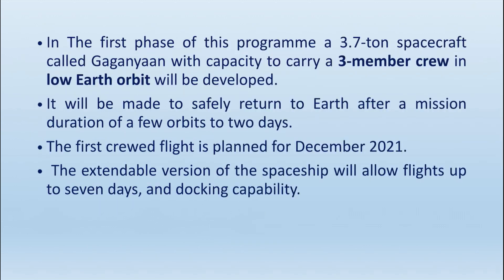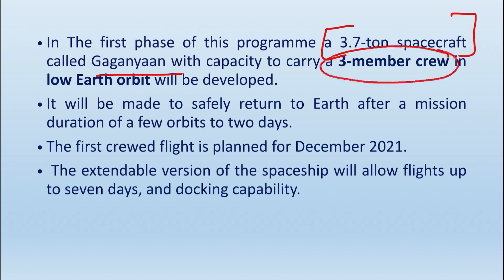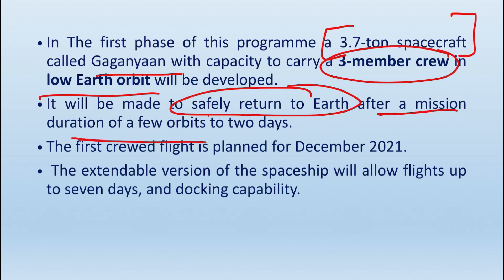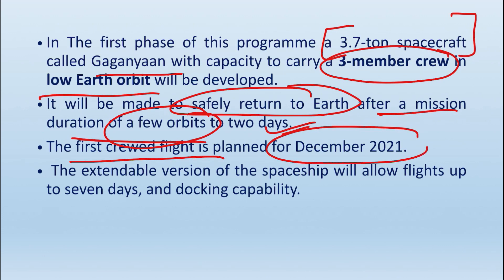In the first phase, there will be a 3.7-ton spacecraft that will carry three crew members — astronauts — into low Earth orbit where they will complete a few orbits. They will safely return to Earth after the mission duration of up to two days due to the orbits, and then safely land. The compartment will be recovered, and the first crewed flight was planned for December 2021.